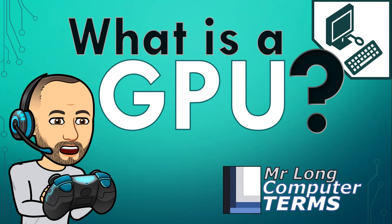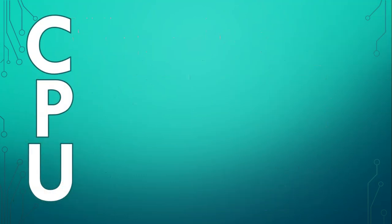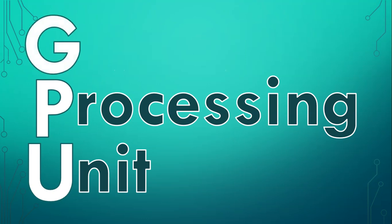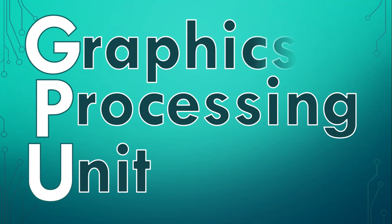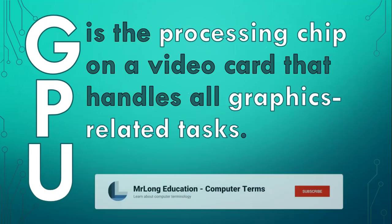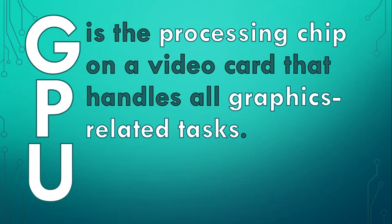What is a GPU? You may have heard of a CPU, or central processing unit, in our previous video, but what about a GPU? GPU stands for graphics processing unit. A GPU is the processing chip on a video card that handles all the graphics related tasks.